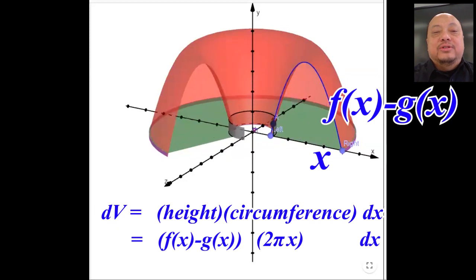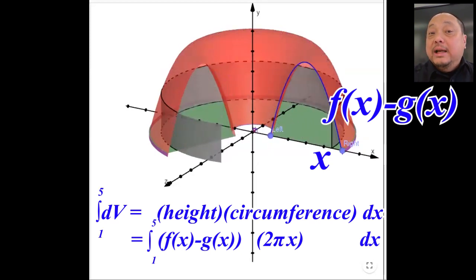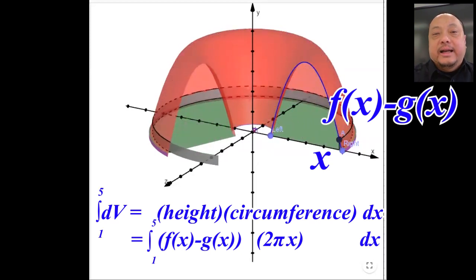The total volume is the integral of dv from the first shell all the way in here at x equals 1, to the last shell out here at x equals 5.